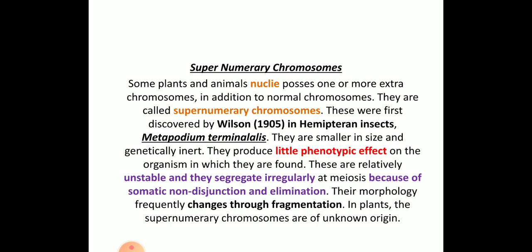In this session we have discussed three different types of chromosomes: under giant chromosomes — lampbrush chromosomes and polytene chromosomes — and supernumerary chromosomes. The difference between polytene chromosomes and lampbrush chromosomes is very important for examination purposes. Thank you.